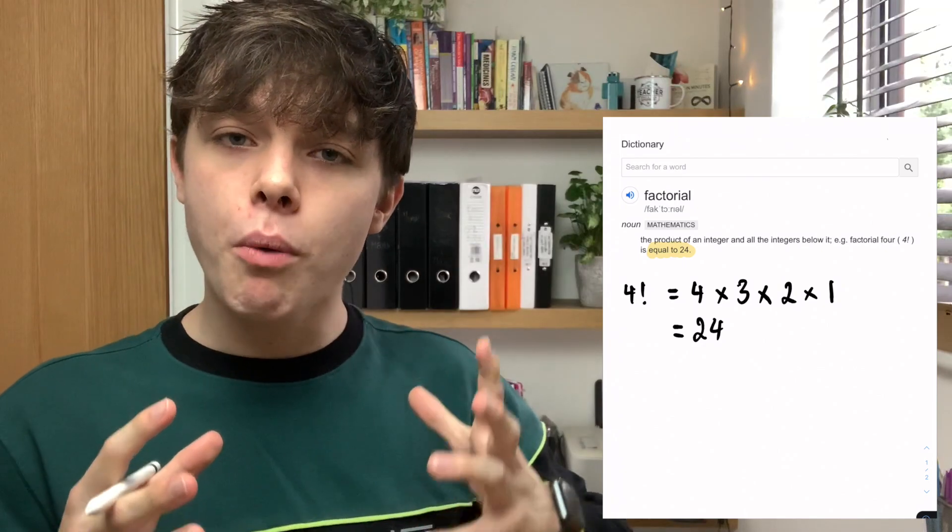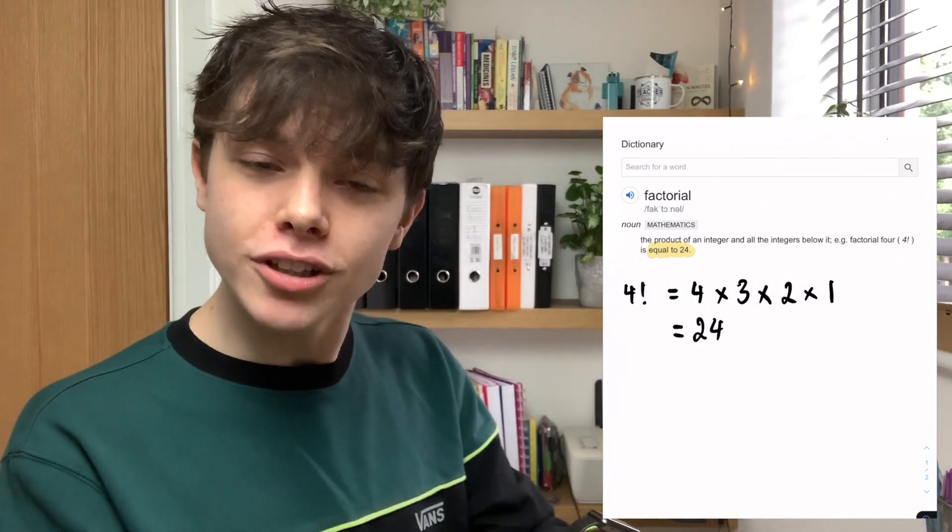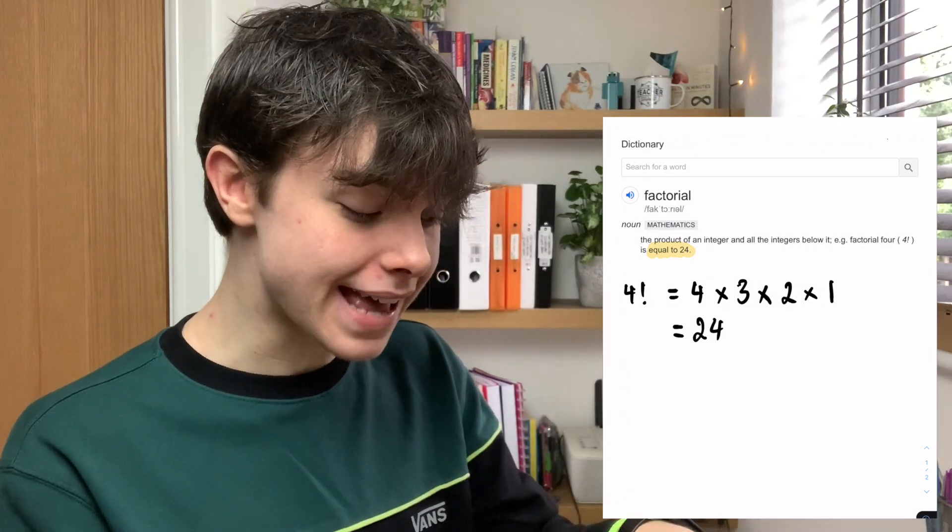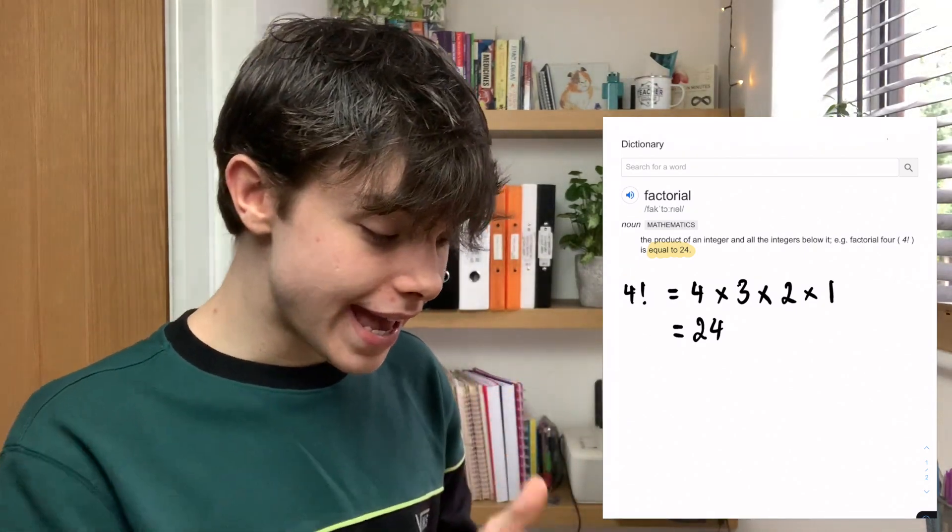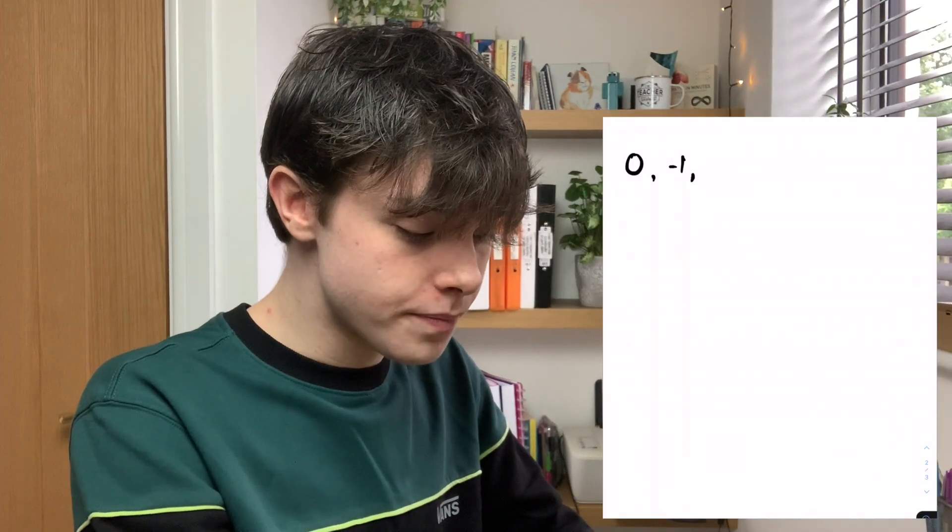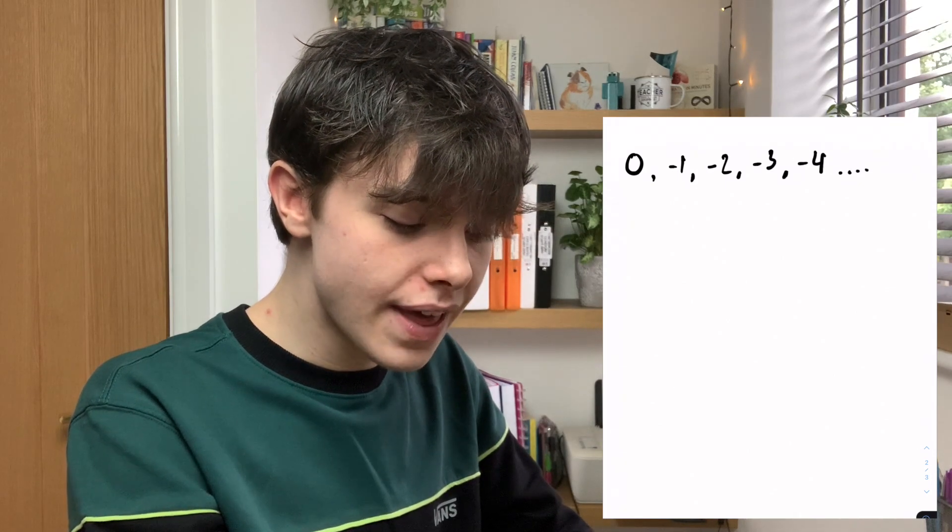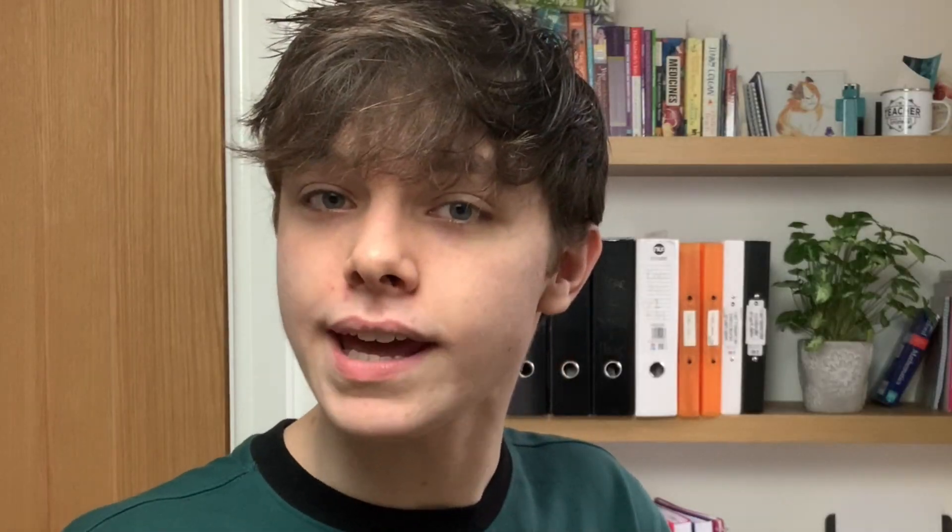But in today's video, what we're going to be looking at is why 0 factorial is equal to 1. Because if we have a look at that definition, it says that a factorial is the product of an integer and all the integers below it. Well, all the integers below 0, let's write them down: minus 1, minus 2, minus 3, minus 4. And that carries on to negative infinity. There isn't an end. So, why is 0 factorial equal to 1? Well, I'm going to have a look at a pattern of all the other factorials.